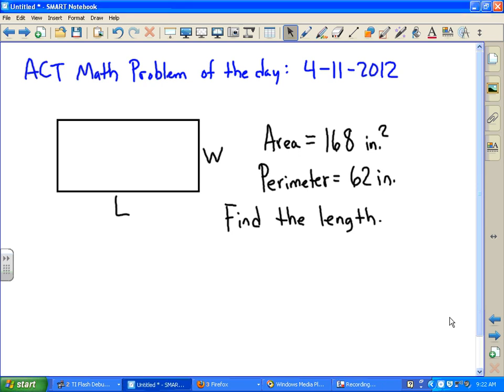Okay, ACT math problem of the day for April the 11th. We have a rectangle with an area of 168 square inches, and the perimeter is given to be 62 inches. We would like to find the length of this rectangle.